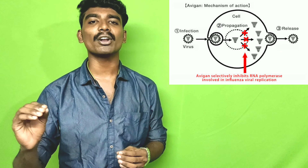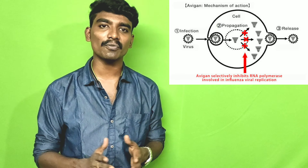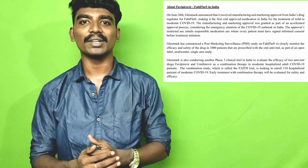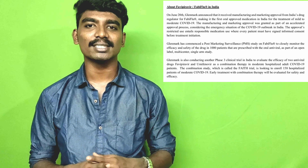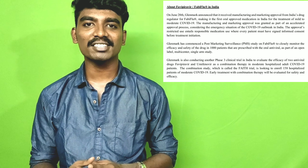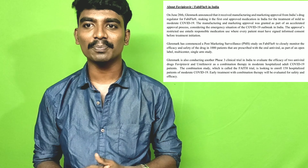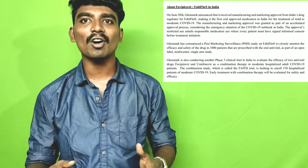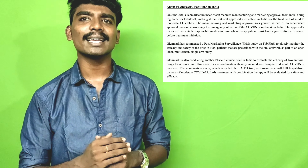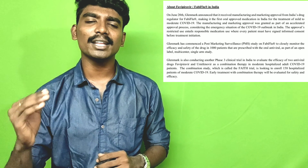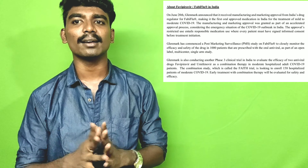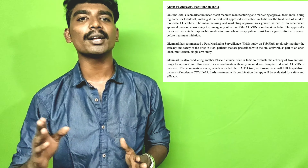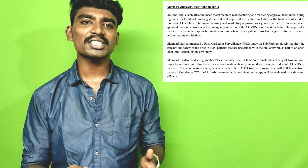Next we discuss the chemistry of Favipiravir. This is the structure of Favipiravir. Favipiravir is a pyrazine carboxamide derivative. Its molecular formula is C5H4FN3O2, which is active against RNA viruses. This is the chemistry of Favipiravir.